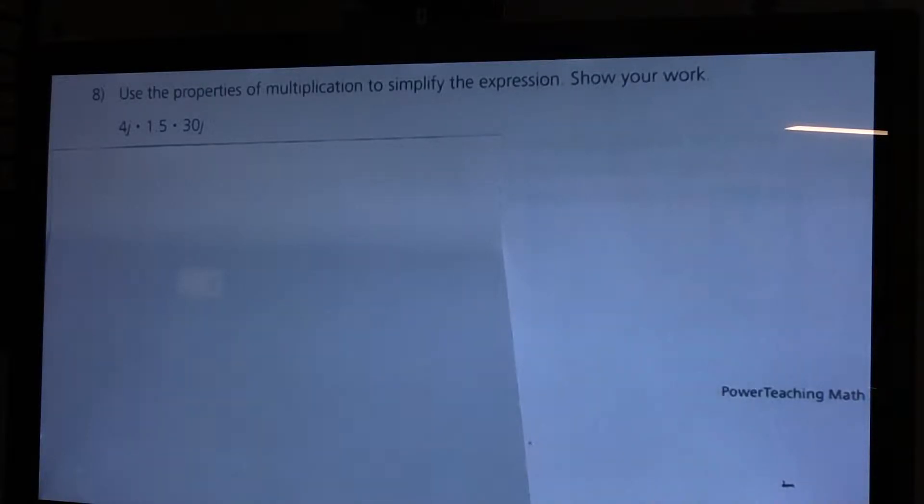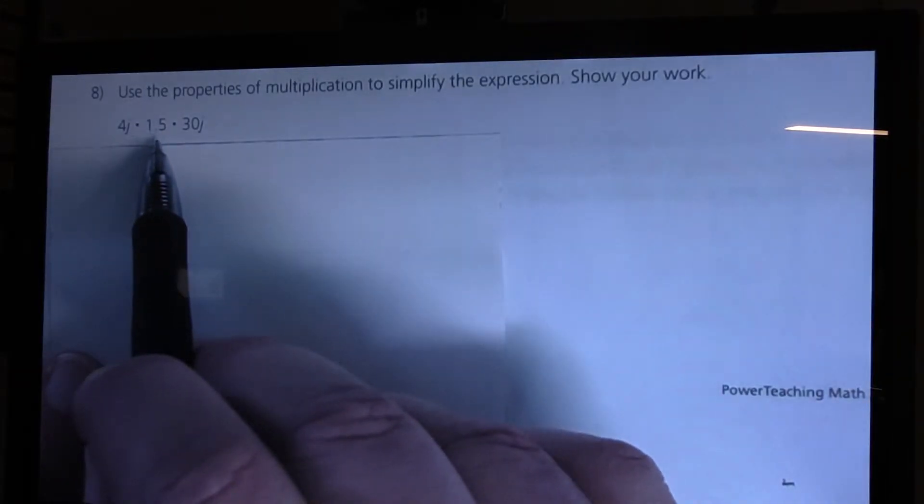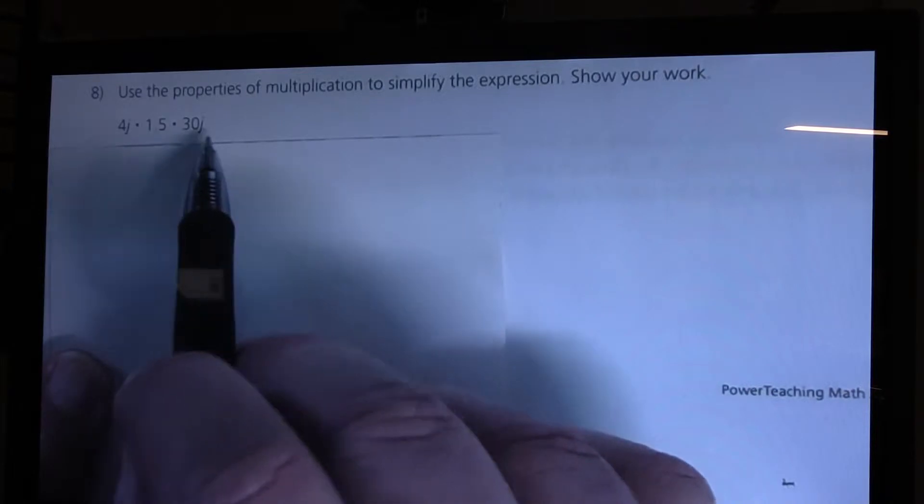Okay, I'm going to use what I know about the properties of multiplication to simplify this expression. Now, I see that it gives us 4j times 1½, or 1 5/10, times 30j.